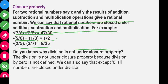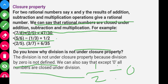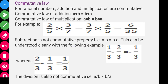Division is not under the closure property because division by zero is not defined. For example, 1/2 divided by 0 is not defined. However, except for zero, all rational numbers are closed under division.